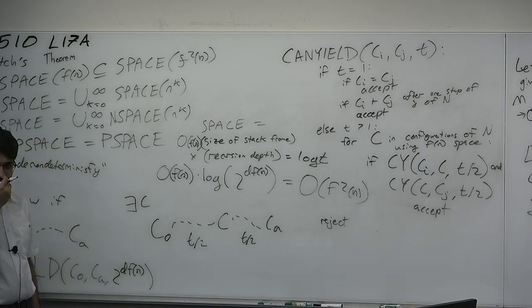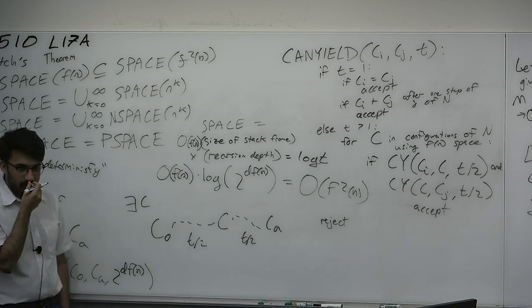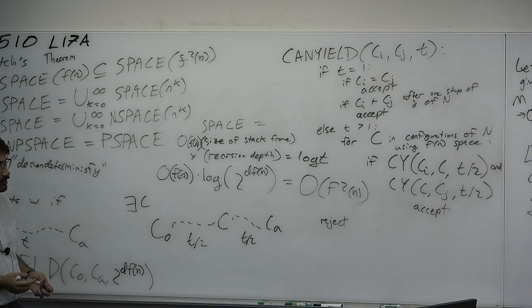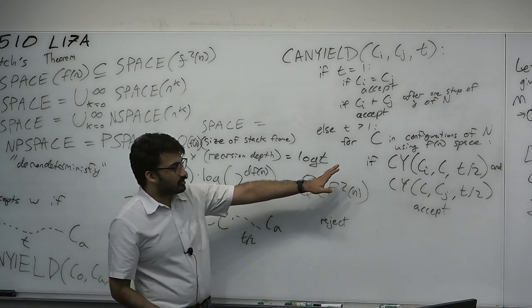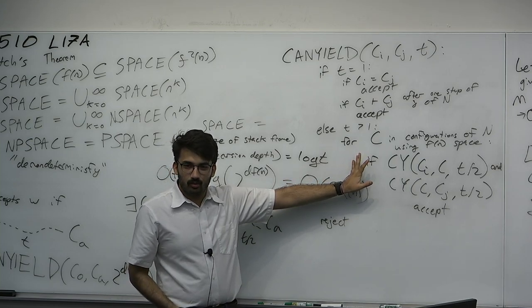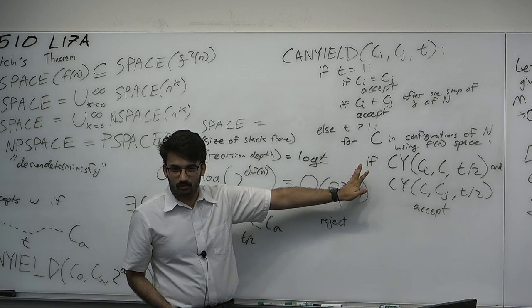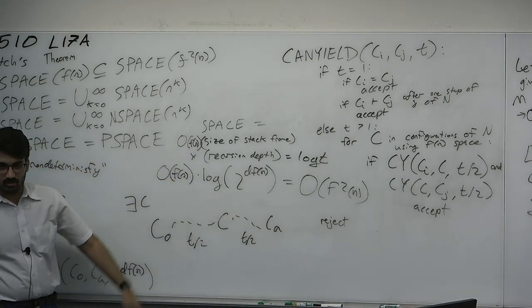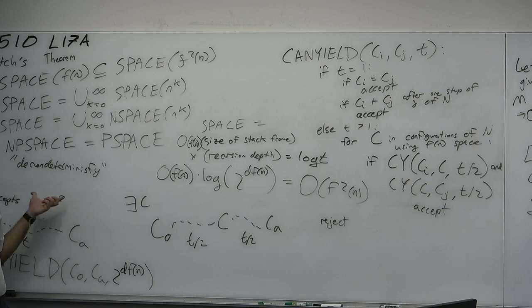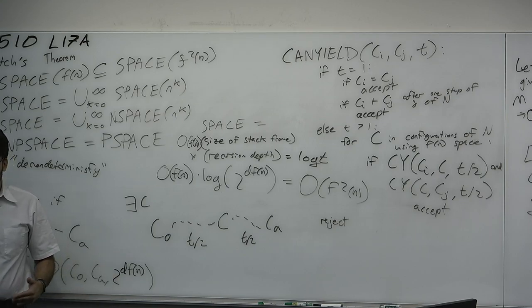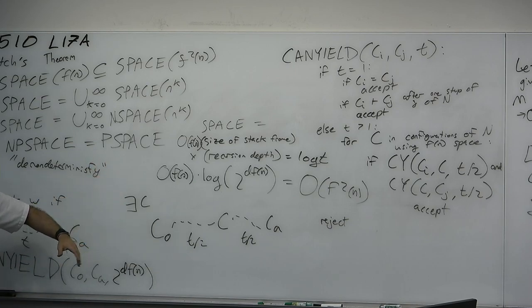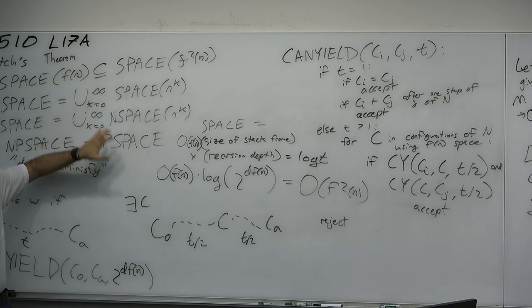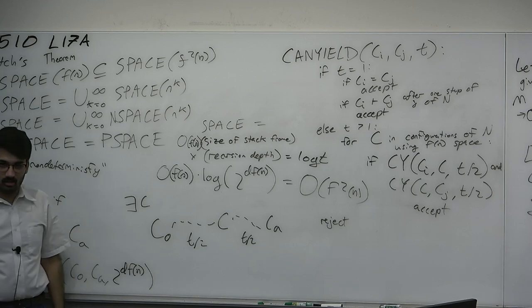Truly a beautiful result. Divide-and-conquer is one of the many tools used in algorithms, but here we're using it to show a simulation totally beyond actual implementations. We use it to exploit space reuse. You would never run this in practice because it takes exponential time, and a non-deterministic computer is a made-up thing anyway. However, the technique still applies to prove this very important theorem — that NPSPACE equals PSPACE.